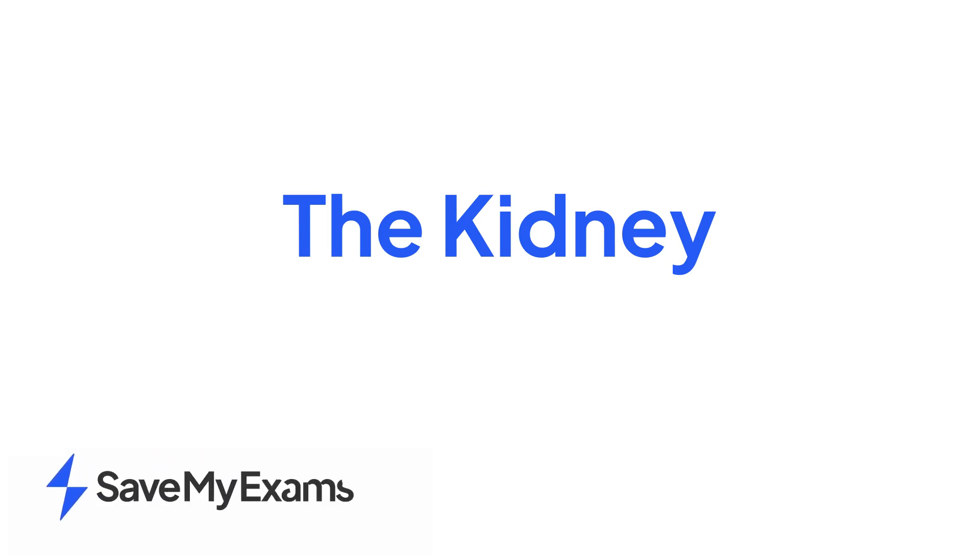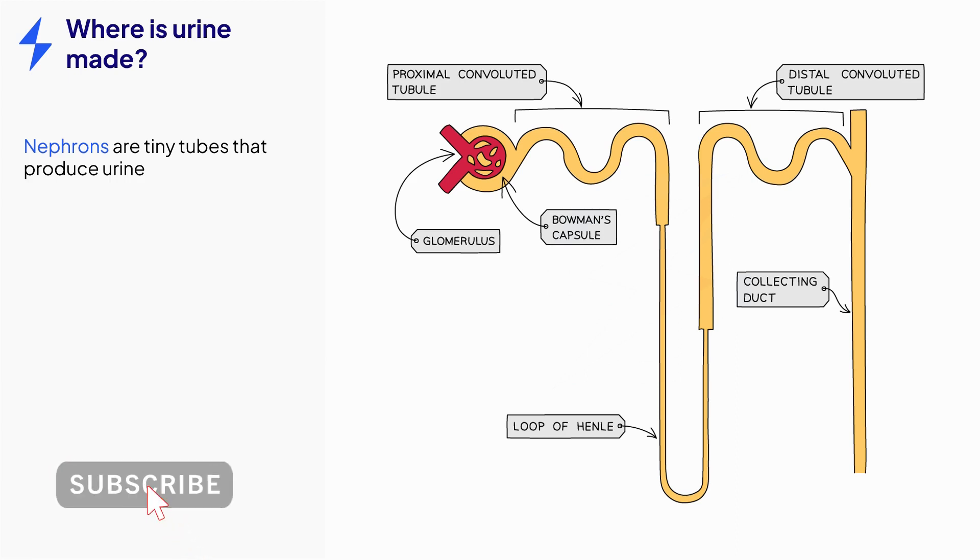This video is on the structure and function of the kidney. The kidneys are responsible for excreting waste products and excess water in the form of urine. Let's start by taking a closer look at where urine is produced.